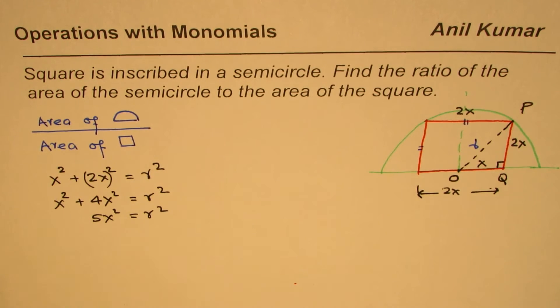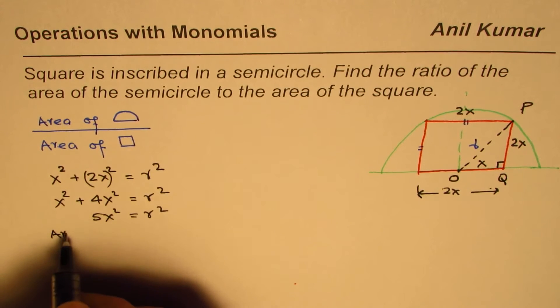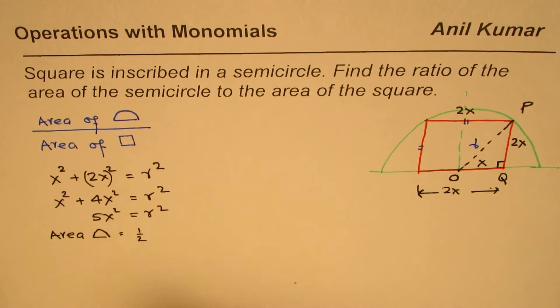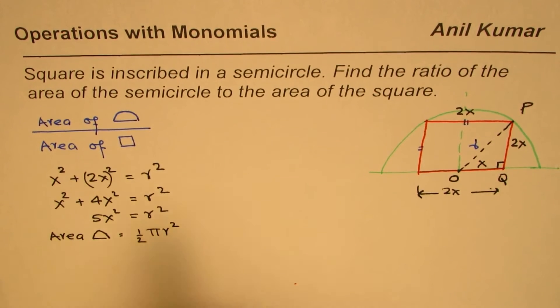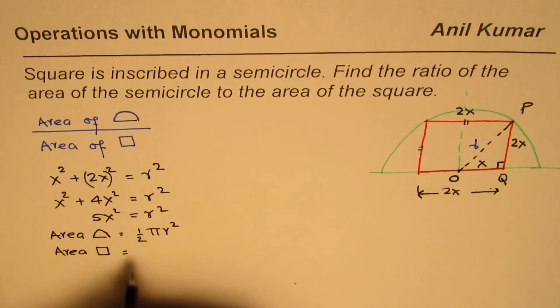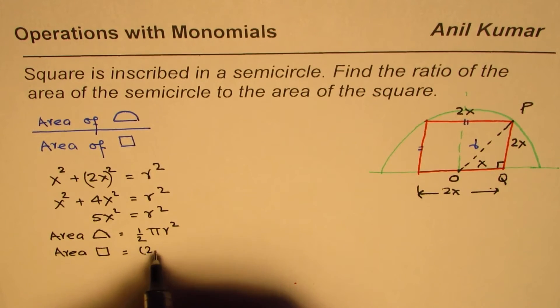So that is a relation between R² and 5x². The question is area of a semicircle. So what is the area of a semicircle? Area of a semicircle is half the area of the full circle, which is πR². Over area of square—what is the area of the square? Area of a square is 4x². You multiply the length with the width, both are 2x, so 2x times 2x gives you 4x².